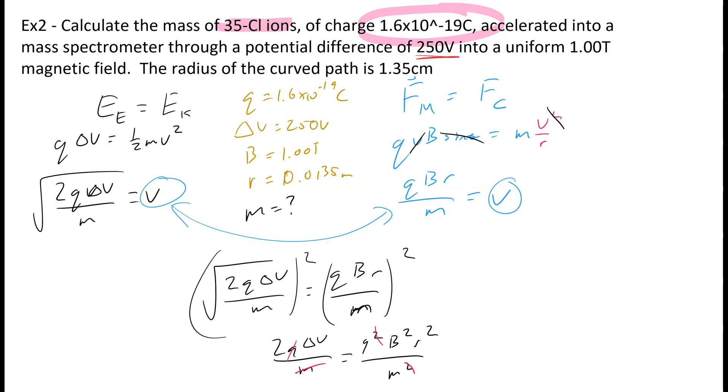Now I want to isolate for m, so I'm going to take all this stuff, bring it down, and take this m and bring it up. So that's going to leave me with m is equal to QB squared R squared over 2 delta V. And if we look at our checklist, we've got Q, we've got B, we've got R, and we've got delta V.